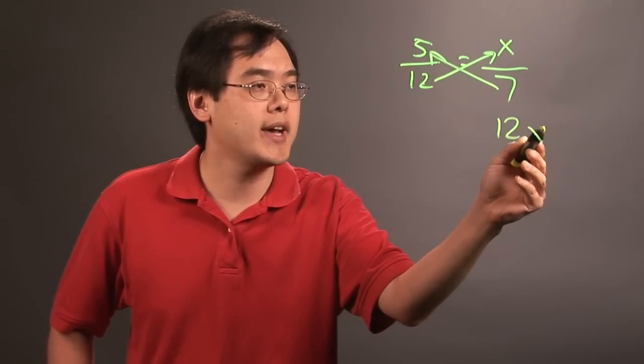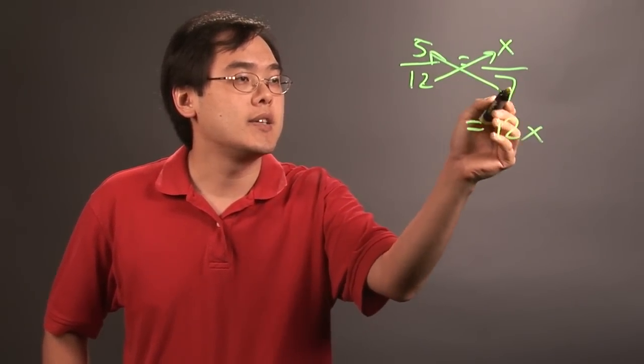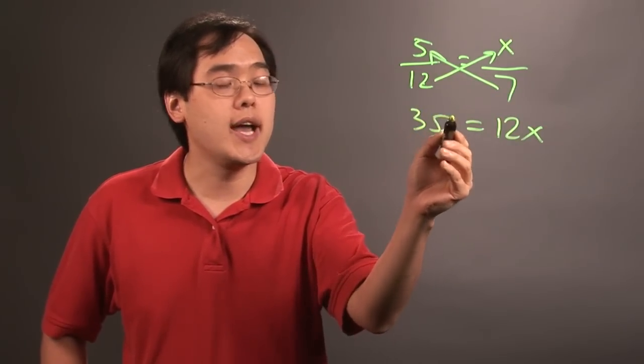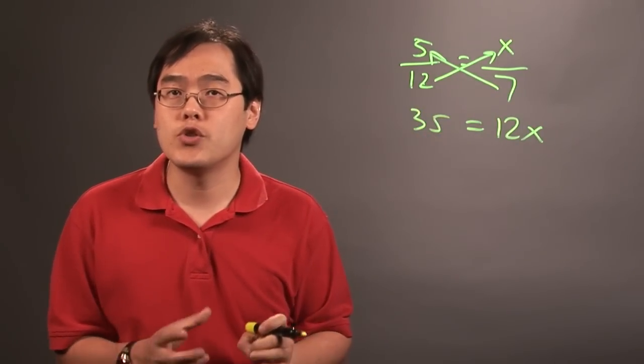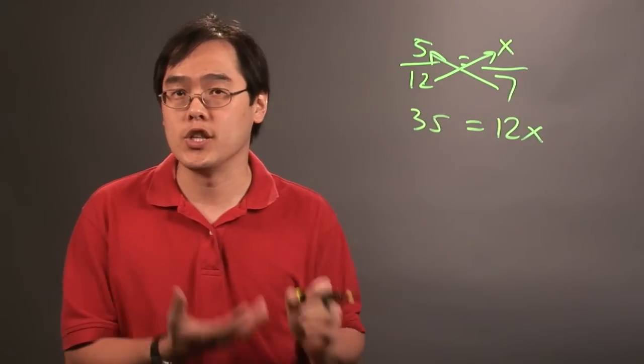you have 12 times x, which is going to equal 12x, and 7 times 5 is going to give you 35. So at this point, cross multiplication allows you to get rid of the fractions and then solve.